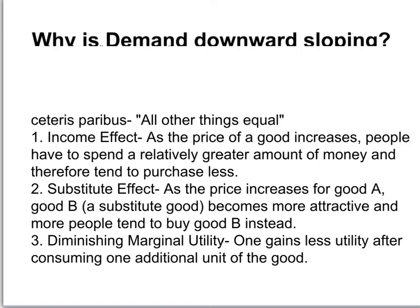The second reason is the substitute effect. As the price increases for good A, good B — which is a substitute good for good A — becomes more attractive and people tend to buy more of good B. So the same thing happens: when price is high, quantity demanded is low.